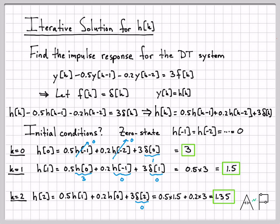We've now solved for the first three values of the impulse response. Obviously, to solve for the entire signal we'd have to do this forever, which isn't ideal. In the next video, we'll learn how to come up with a closed-form equation for H of K that holds for all time. The iterative approach is still important because you'll always need a few of these values before applying the closed-form solution.